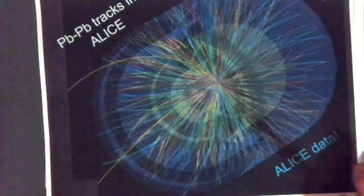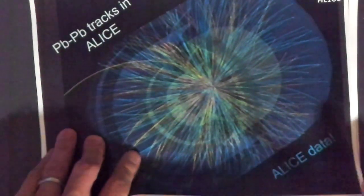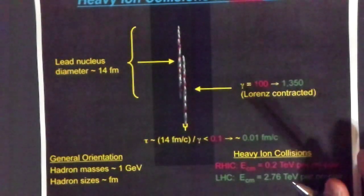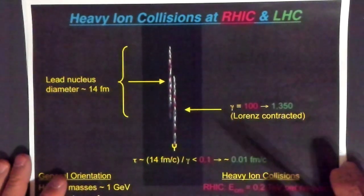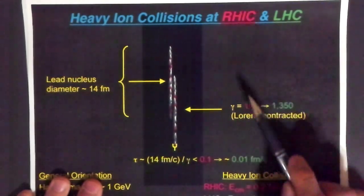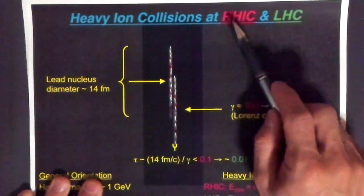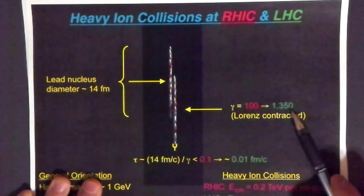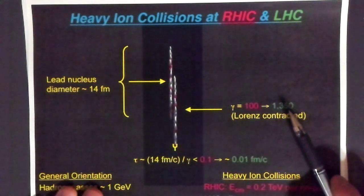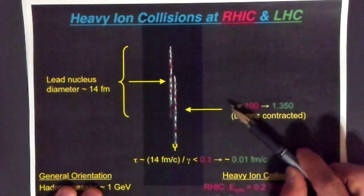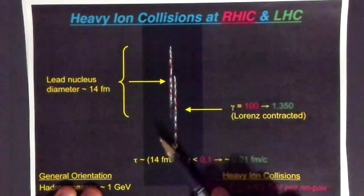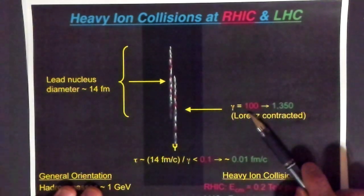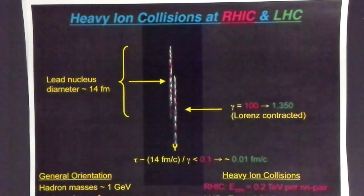Here are some of the tracks you see in the ALICE data — an actual reconstructed event. With these tracks, you try to figure out the underlying physics. Now, here's a sense of the geometry of the system. In red are the RHIC numbers, and in green are the LHC numbers. Because these are relativistic collisions, these nuclei are moving at close to the speed of light, so you get a lot of Lorentz contraction.